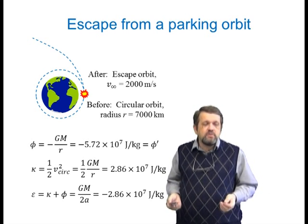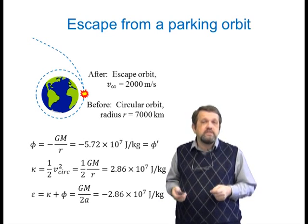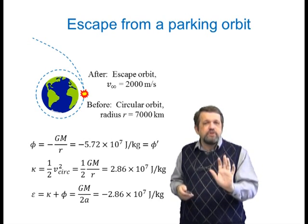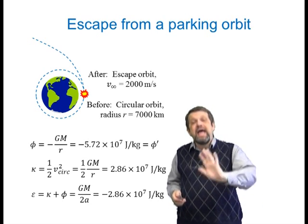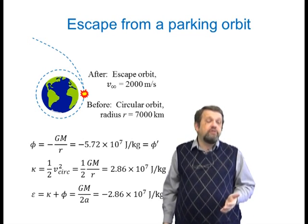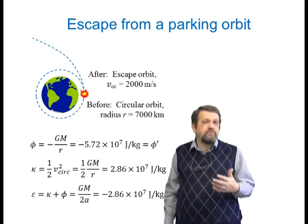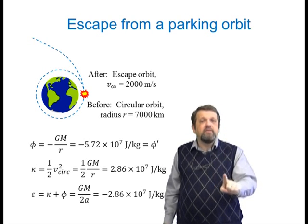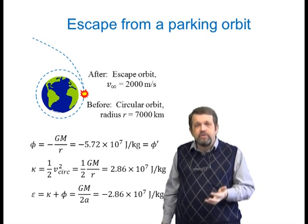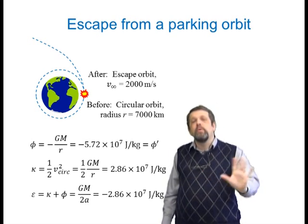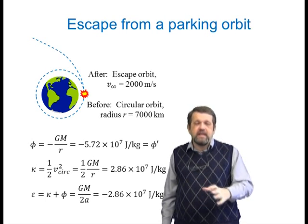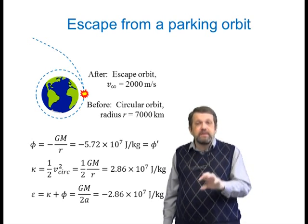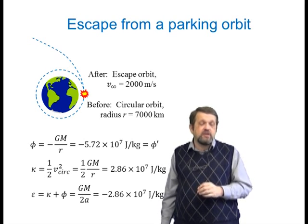Working through the numbers: the potential energy is about −5.72×10⁷ J/kg (which equals m²/s²), and this remains unchanged after firing the motors. The specific kinetic energy in the circular parking orbit is 2.86×10⁷ J/kg — note that for circular orbits, KE is always exactly half the magnitude of the potential energy. Therefore the total energy is −2.86×10⁷ J/kg.